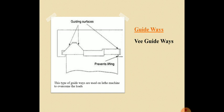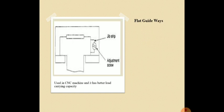Next is flat guideways. From the figure, you can see it has jib strips and adjustment screws. This type of guideway is used in CNC machines and has better load carrying capacity.